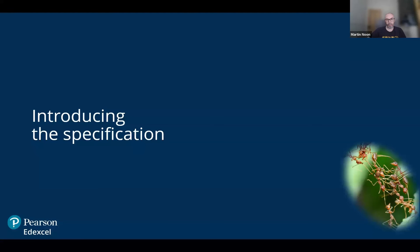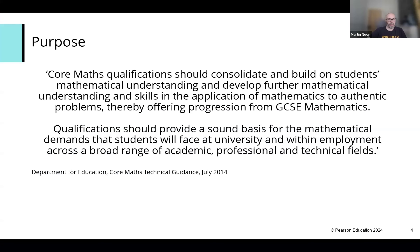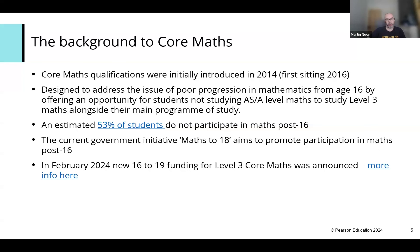Let's start by introducing the specification. The purpose of the course, as set out by the Department of Education, was to provide a sound basis for the mathematical demands that students will face at university or employment, but it's not the same as GCSE maths or A-level maths. The idea is to target students who were achieving a good pass or above at GCSE and were not going to study AS or A-level mathematics, but still wanted to carry on doing maths. An estimated 53% of students do not participate in post-16 mathematics, and this new government initiative — Maths to 18 — aims to promote that post-16 maths.